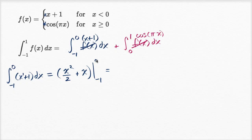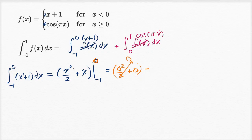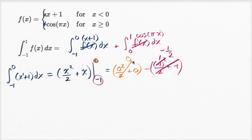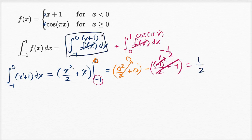This is going to be equal to: evaluated at zero, it's zero squared over two plus zero, which is just zero. Minus it evaluated at negative one: negative one squared over two plus negative one. Negative one squared is just one, so it's one half plus negative one. One half minus one is negative one half. But then we're subtracting negative one half, so zero minus negative one half is equal to positive one half. This first part is positive one half.